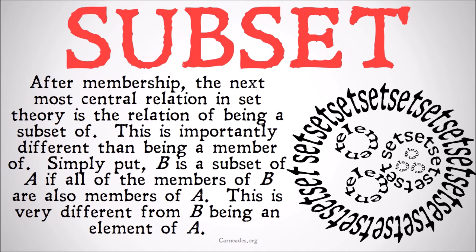This is importantly different from being a member of. B is a subset of A if all the members of B are also members of A. This is very different from B being an element of A. B is a subset of A if everything that's in B is also in A, but B itself does not need to be in A — simply all the parts of B.